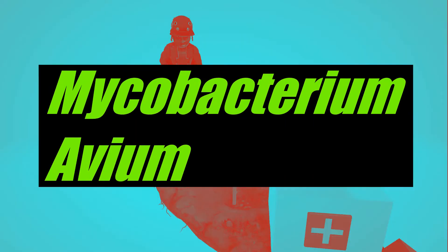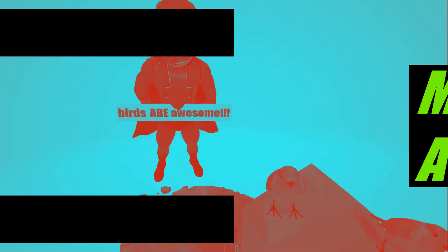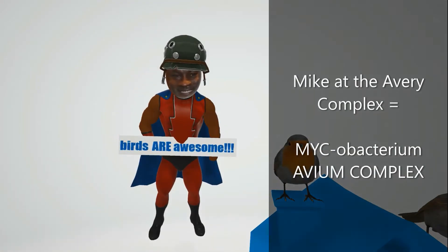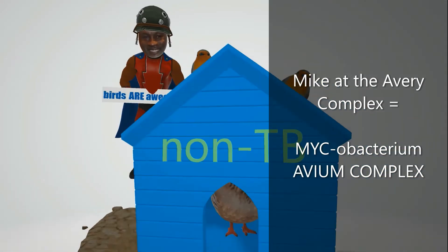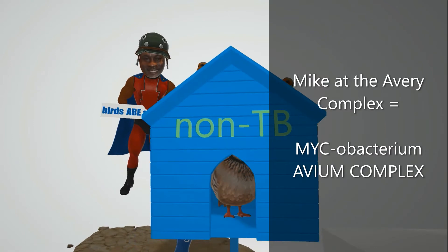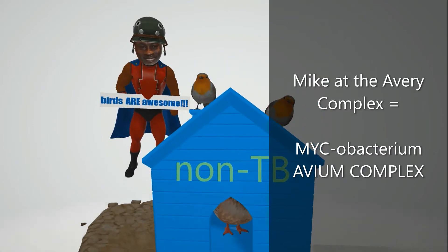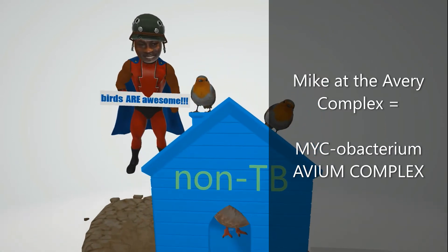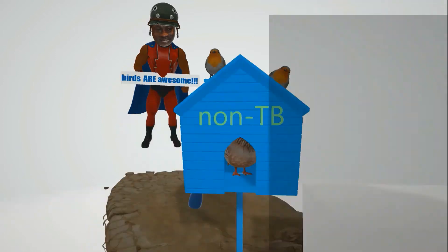Welcome to our scene on Mycobacterium avium, represented by Mike — Michael Jordan at the aviary. The aviary is where birds hang out, and here we have the aviary complex for Mycobacterium avium complex (MAC).